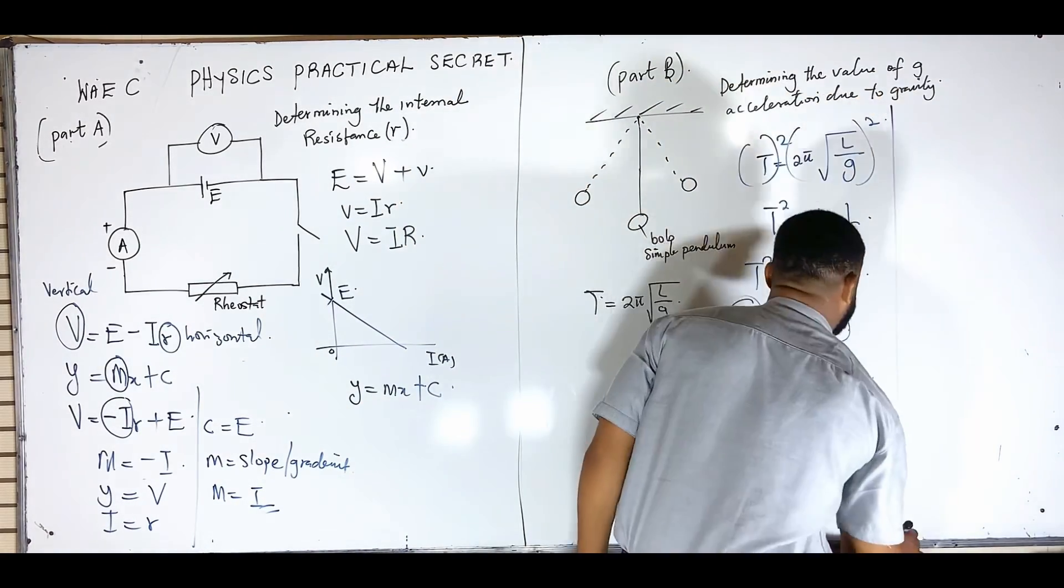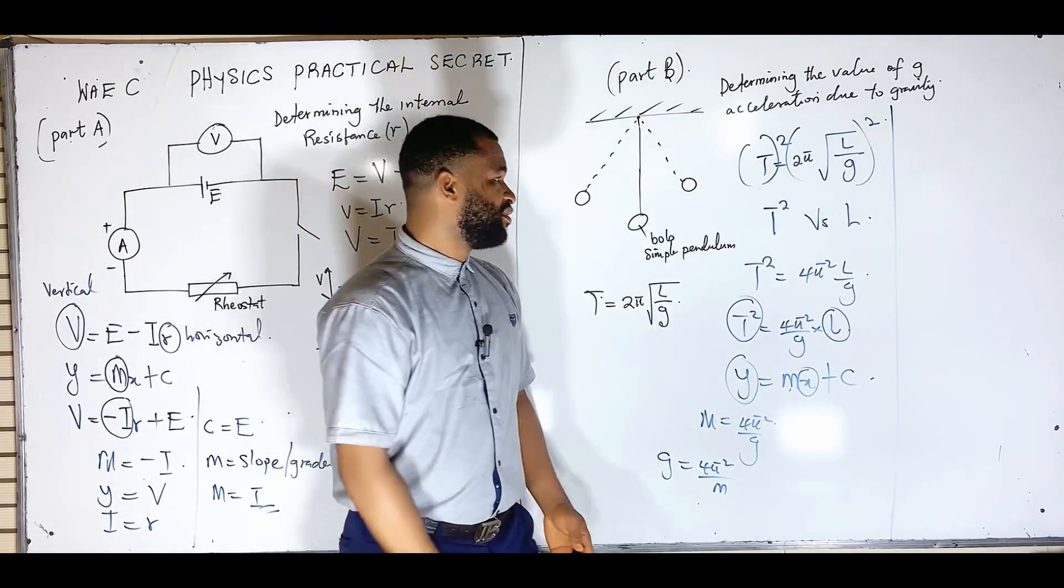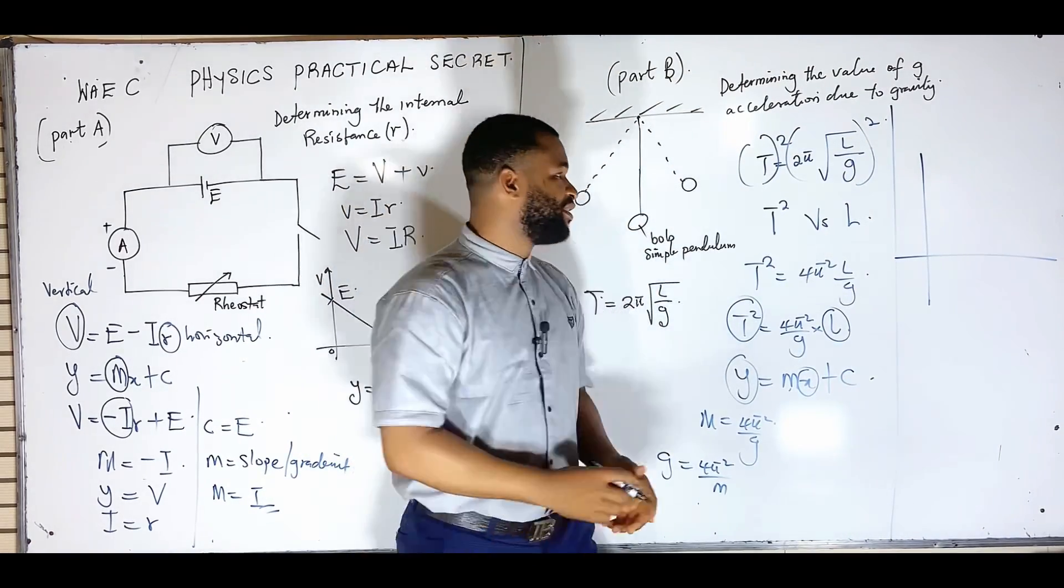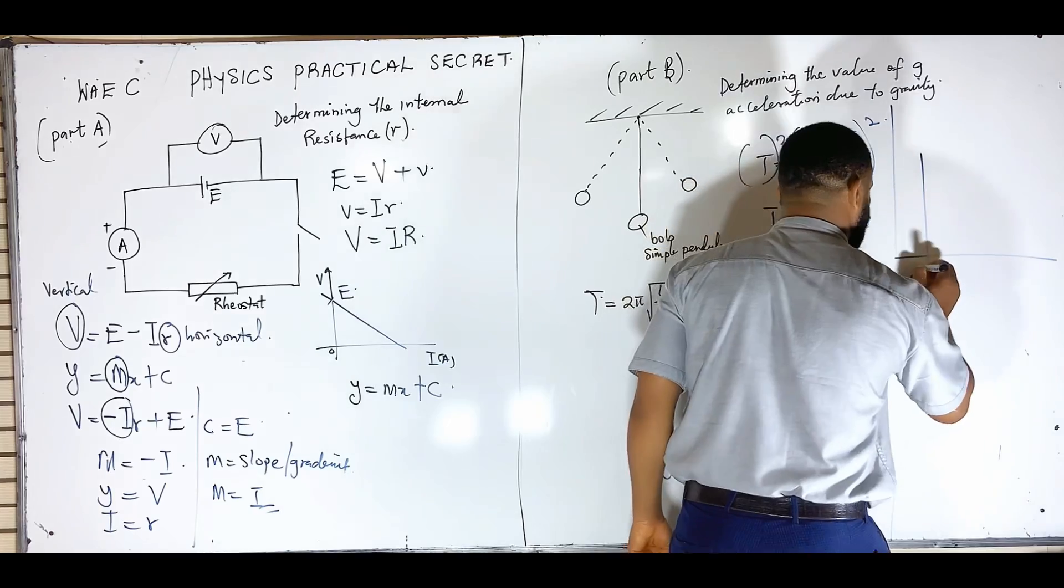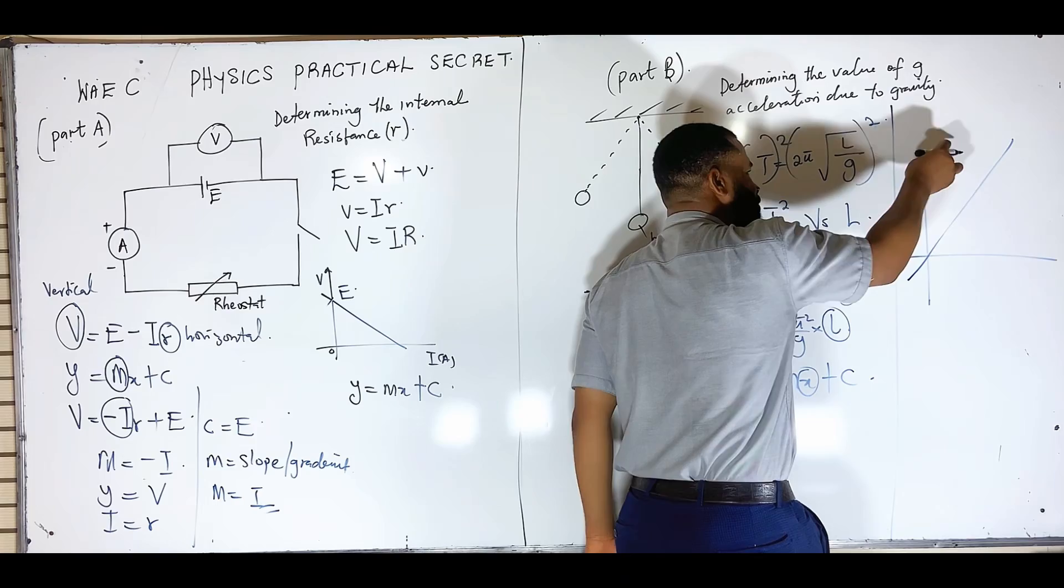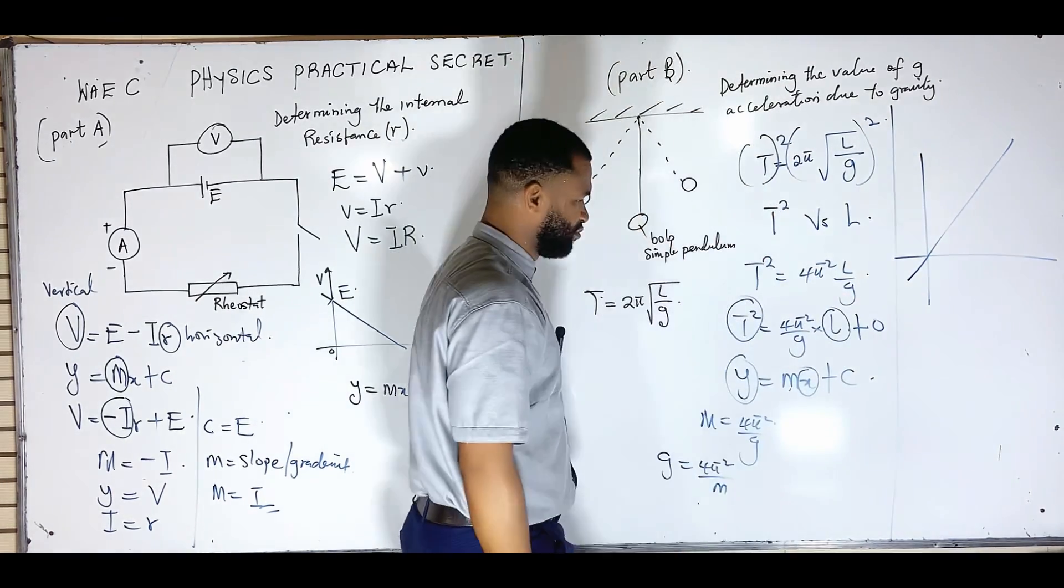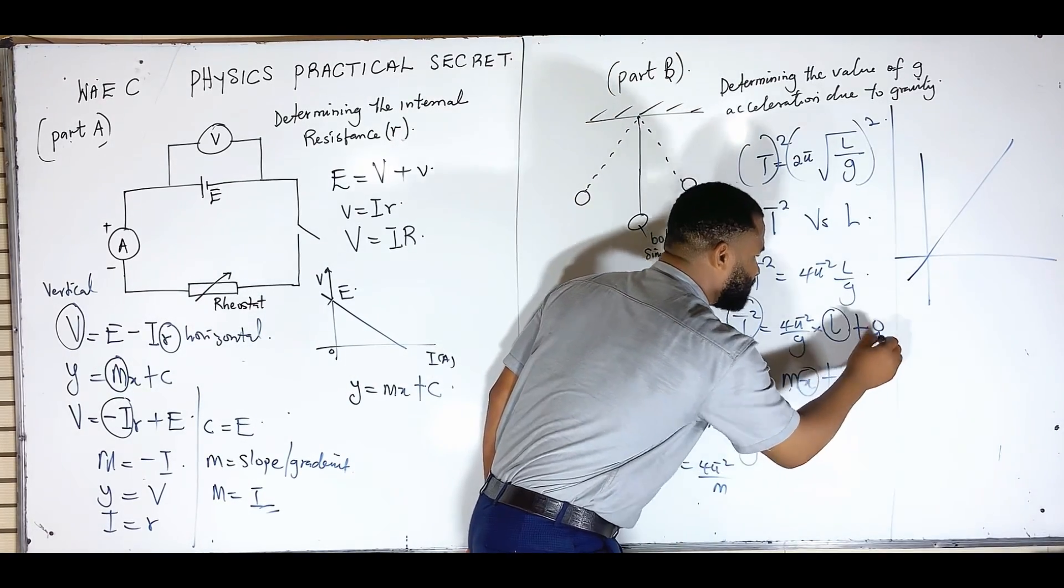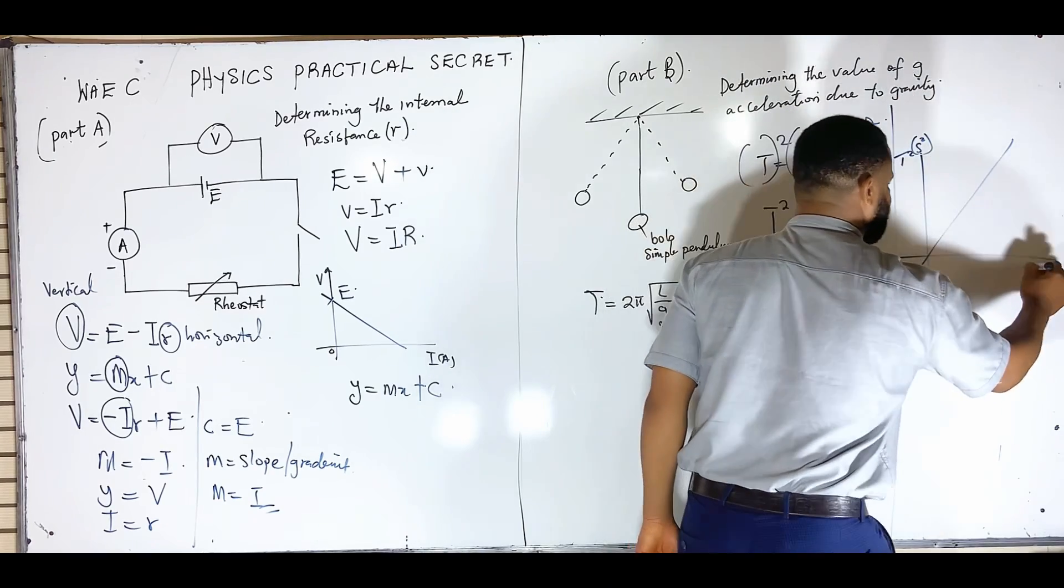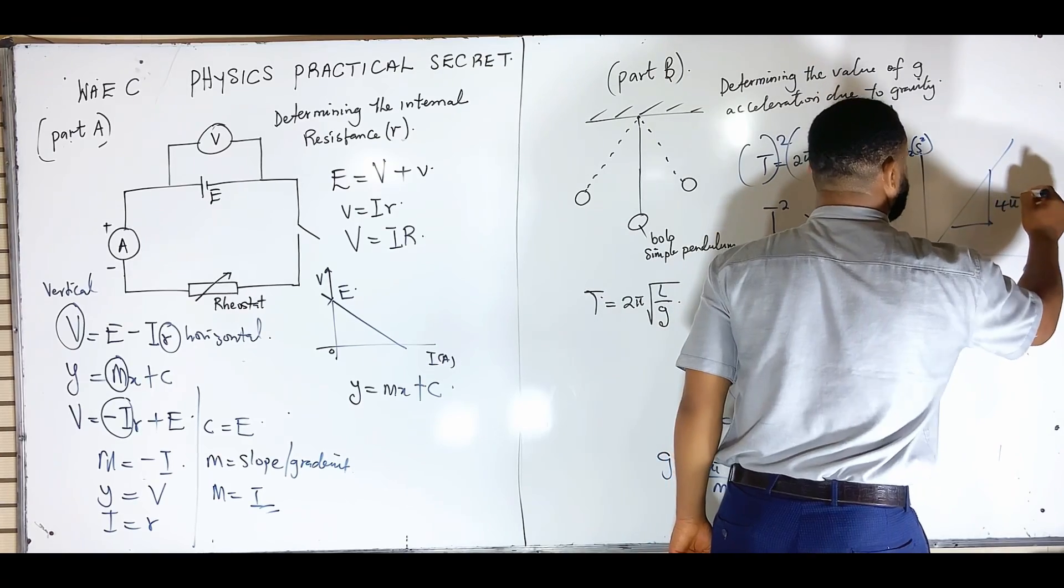The next thing I am going to ask myself is how will my graph look like? The graph is going to pass through the center. Why? Because where this graph cuts the Y axis is at 0, because this C is representing 0. So this is T square, and this is L in meters or centimeters, and this is the slope, which is 4π² all over g.